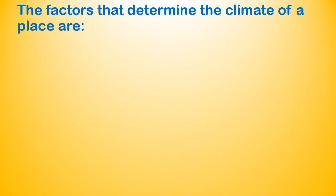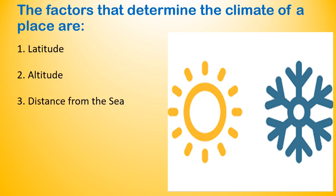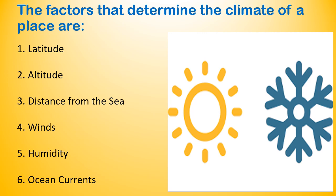The factors that determine the climate of a place are: Latitude, Altitude, Distance from the sea, Winds, Humidity, and Ocean currents.